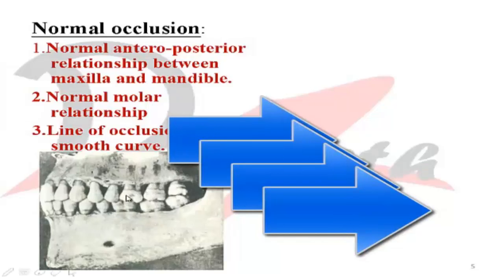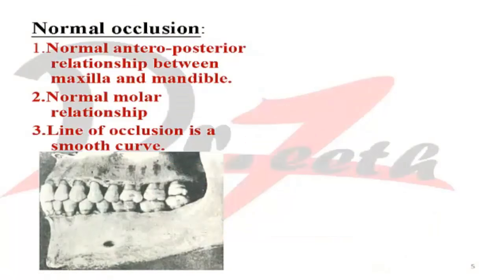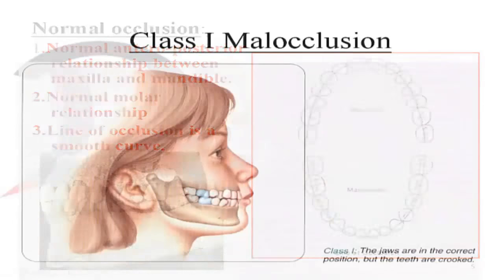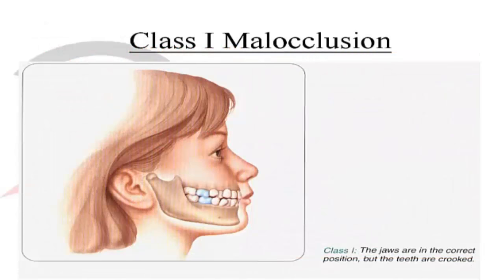We can see the maxillary first permanent molar mesiobuccal cusp occluding with the buccal groove of the mandibular first permanent molar — this was the image used by Angle to describe the molar relationship. Regarding the line of occlusion, Angle described that if you draw a line or place a wire over the occlusal surfaces of the posterior teeth and the incisal surface of the anterior teeth, it should form a smooth curve. If there is no smooth curve, it will be classified as malocclusion.